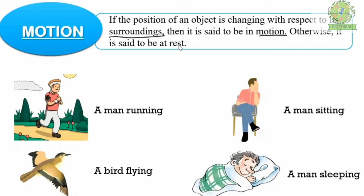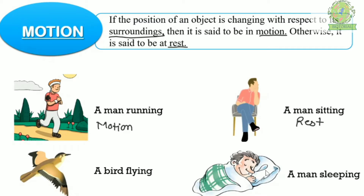If the object is changing its position, it is said to be in motion; if not, it is at rest. For example, this man is jogging — the surrounding is not moving, only this person is moving, so this man is in motion. A bird that is flying is also in motion. By contrast, a man sitting on a chair not changing his position is at rest, and a person sleeping in one place is also at rest.